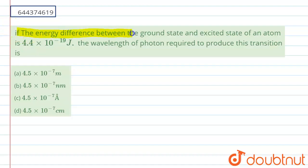It is given: if the energy difference between the ground state and excited state of an atom is 4.4 × 10^-19 joules, then the wavelength of photon required to produce this transition is. So basically we are given with the energy difference.